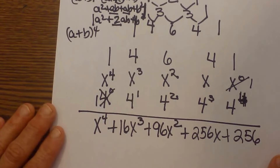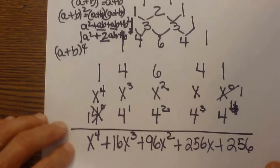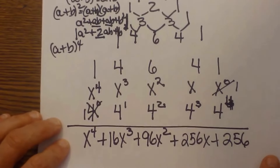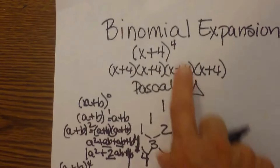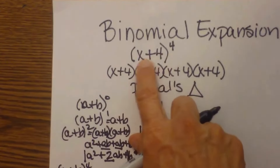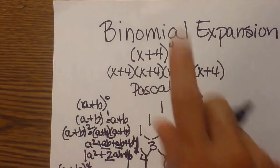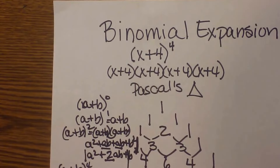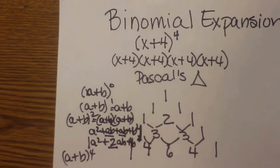So there's my first example. Check for another video where I do one that has a negative or subtraction in the binomial — that changes the answer slightly, so look out for that example.